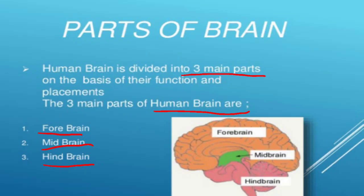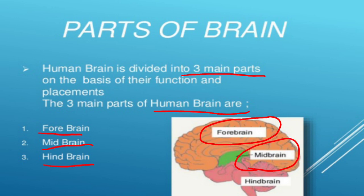If we look at the diagram, we have the human brain diagram here. Looking at it, we can see that the largest part of our brain is the forebrain. Just below the forebrain is a smaller part called the midbrain, and further next from the midbrain is the hindbrain.